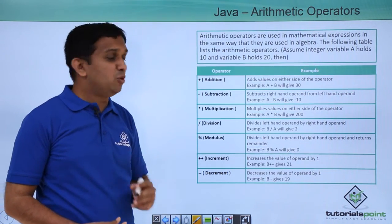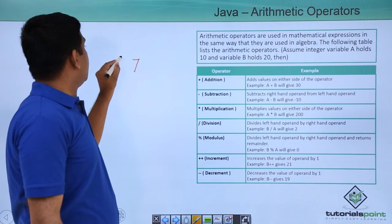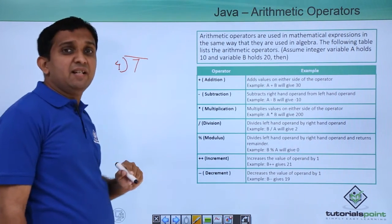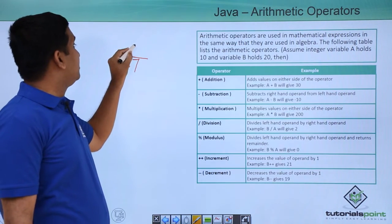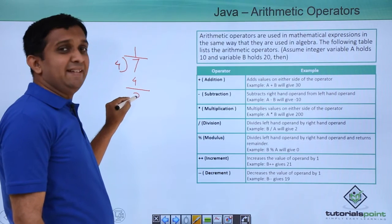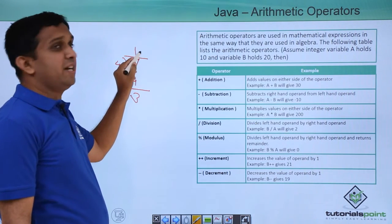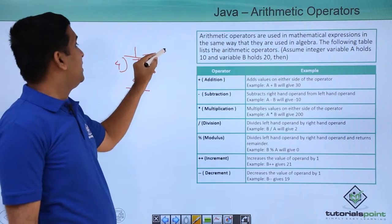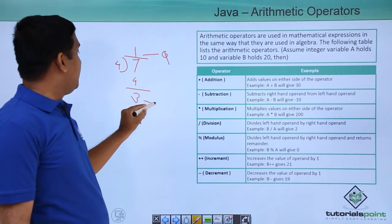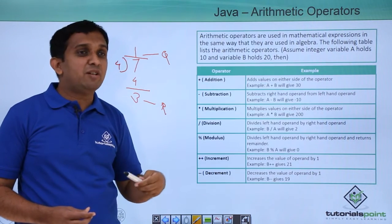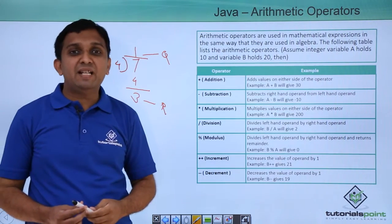For example, suppose I divide 7 by 4. In this case, the quotient will be 1 and the remainder will be 3. Quotient is given by the division operator and remainder is given by the mod operator. So if I say 7 mod 4, it will give me the answer 3.